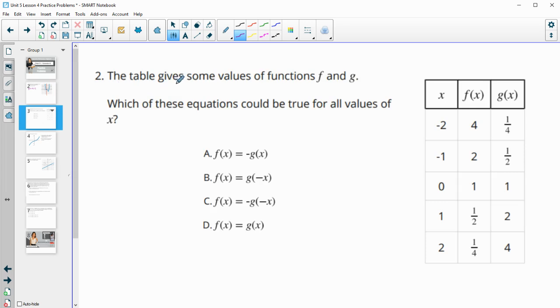So number two, the table gives some values of functions f and g. Which of the following equations could be true for all values? So when we're looking in here, the way you're reading this is f of x equals the opposite of g of x. So when we're plugging in an x value it's the same x value but it's going to give back opposite y values. So we're going to look at negative two here.